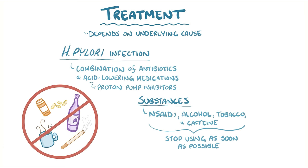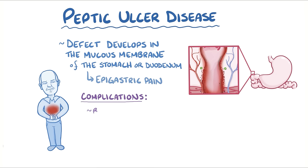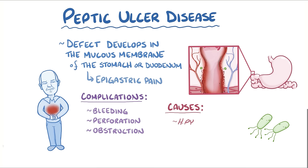As a quick recap: peptic ulcer disease is when a defect develops in the mucous membrane of the stomach or duodenum, and this causes epigastric pain. Occasionally they can cause complications like bleeding, perforation, and obstruction. In a lot of cases, they're caused by an H. pylori infection or the use of NSAIDs.